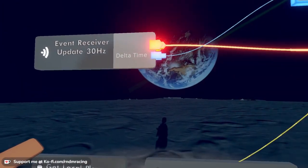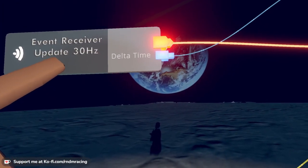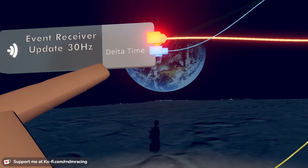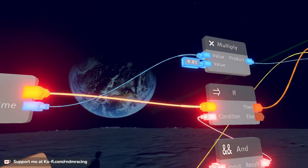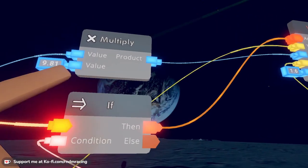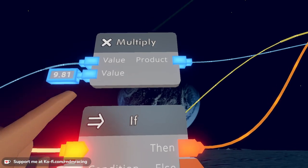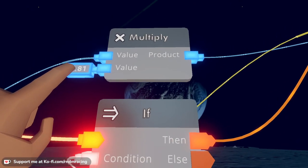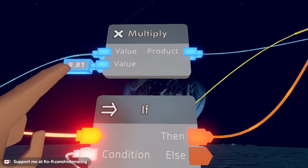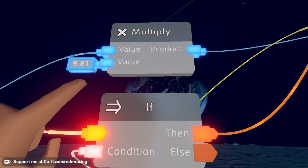We are using the Delta Time for a multiplication over here. We're multiplying the Delta by 9.81. This is really important. This is actually the actual gravity on the moon, on Earth's moon, right? So that's why we're using this number.